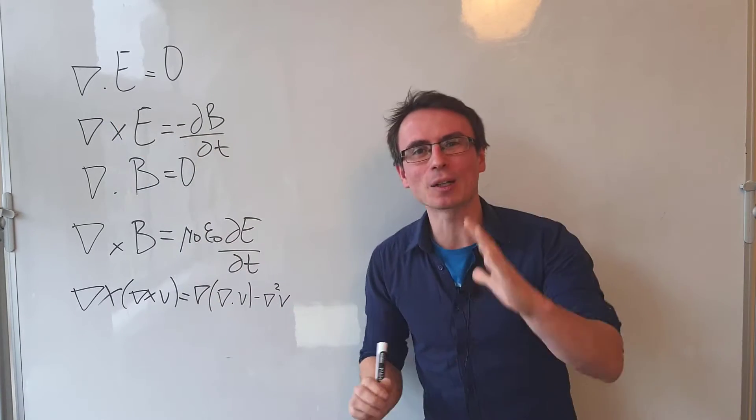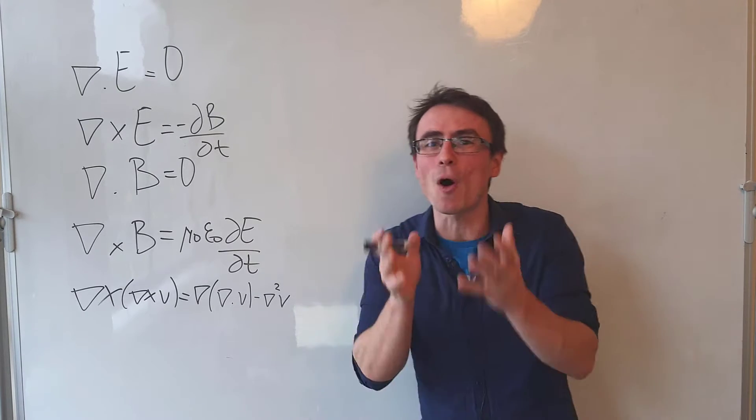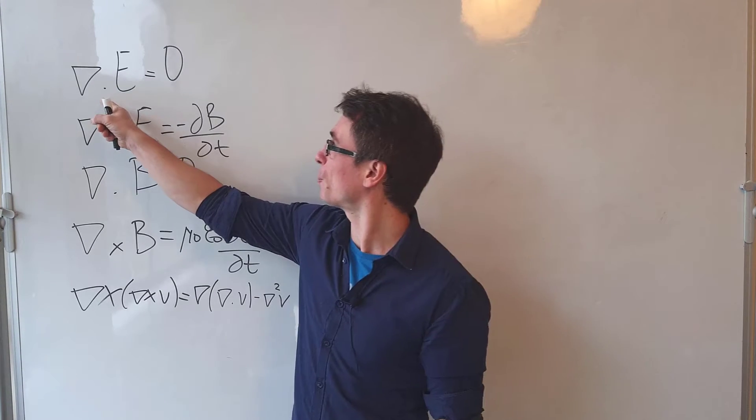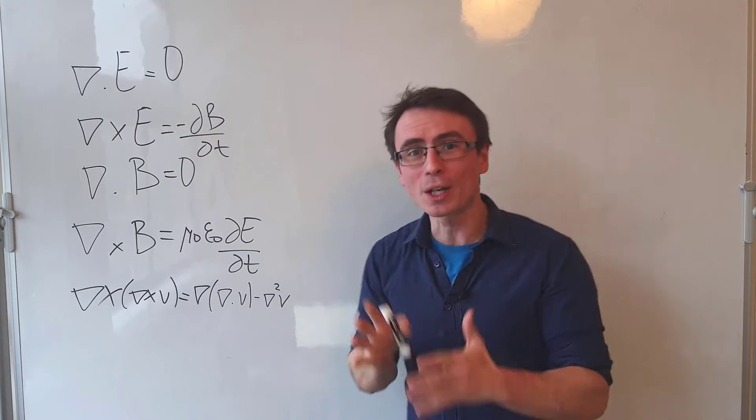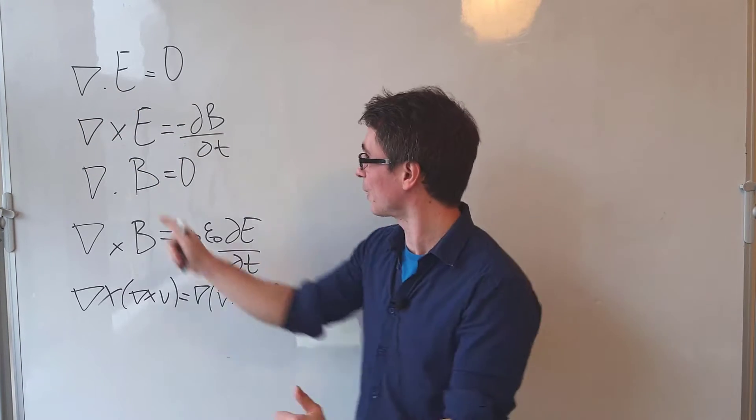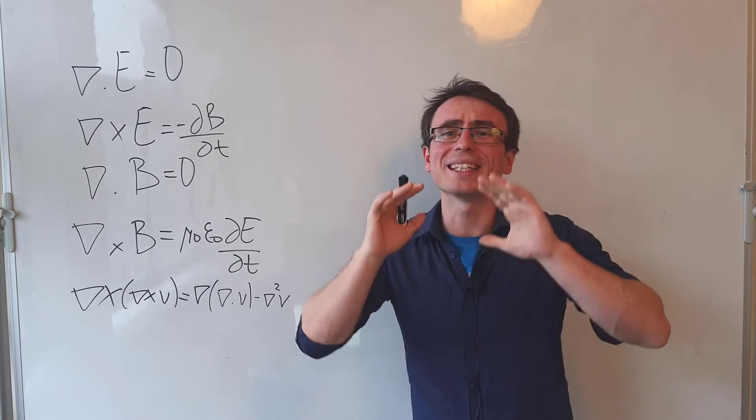If you've never seen this upside down triangle before, do not worry. Think of it as a derivative operator vector. If we multiply it by the dot product, we call this the divergence. And if we use the cross product to multiply it with another vector, we call that the curl.